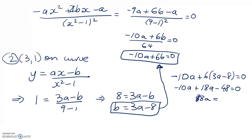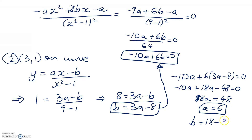That gives 8a equals 48, so a equals 6. And then b equals 18 minus 8, so b equals 10. Right, that's it, we're finished. First excellence question done. Thanks for watching.